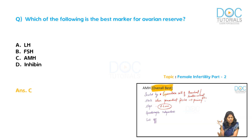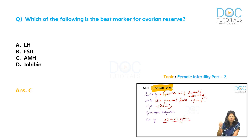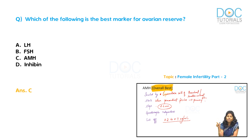AMH is gonadotropin independent — it does not respond to GnRH or FSH and gradually falls with age. Therefore, AMH can be measured on any given day of the cycle, whereas FSH and estradiol are best measured on day 2. AMH is the overall best marker for ovarian reserve. The cutoff for very poor ovarian reserve is 0.2 to 0.7 nanogram per mL — below this, the ovaries are unlikely to respond to any amount of gonadotropins.